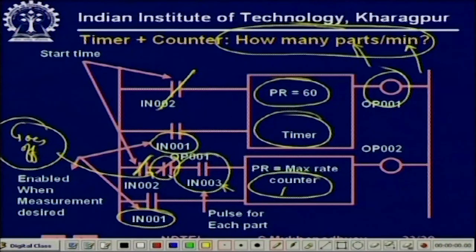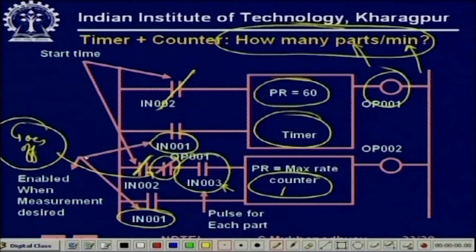When this goes to 0, this becomes open. Whether a pulse comes or not it does not matter — this cannot be 1 because these are in series. Therefore at that time, in the counter you have the value of how many parts have passed over the conveyor in the last minute.